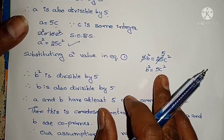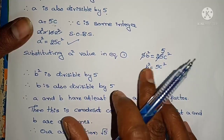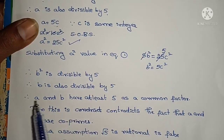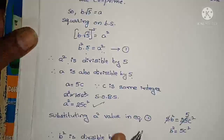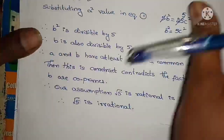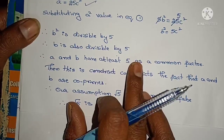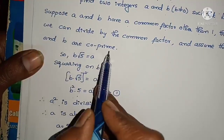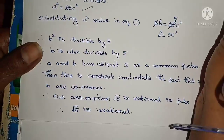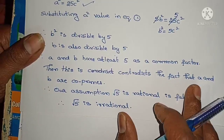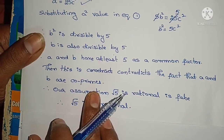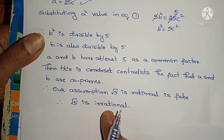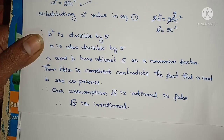So I got b² = 5c², meaning b² is divisible by 5 and therefore b is also divisible by 5. Both a and b are divisible by 5, meaning they have 5 as a common factor — but we considered a and b as co-primes. This is a contradiction, so our assumption is false. Therefore root 5 is irrational.